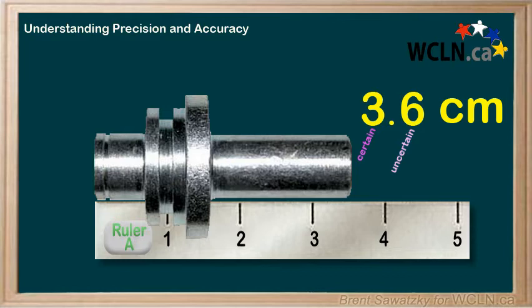If we were asked how many significant figures, or sig figs, are in this measurement, we would say two — one certain digit and one uncertain digit.